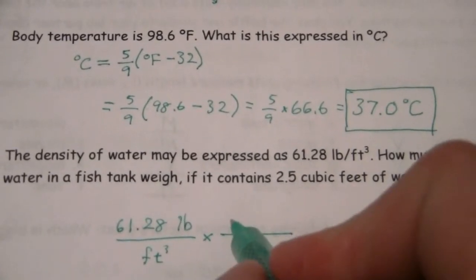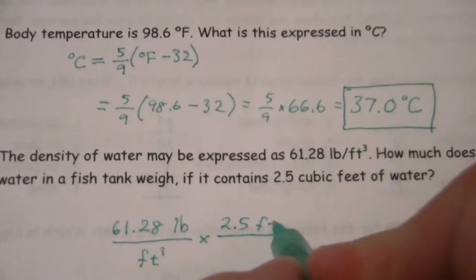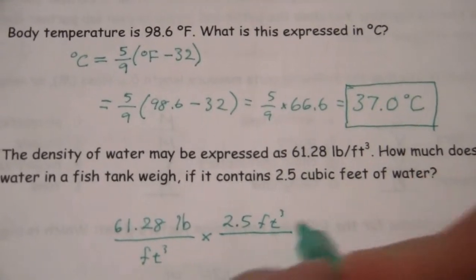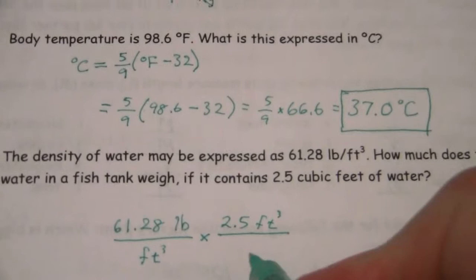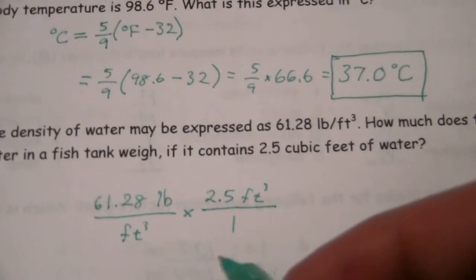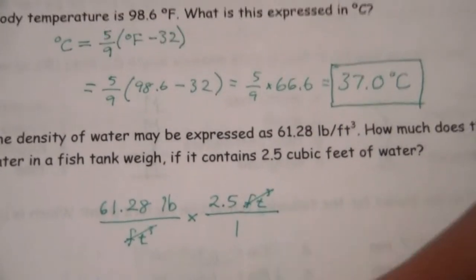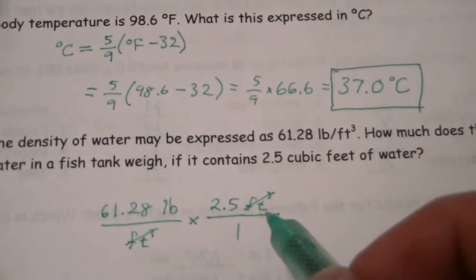You could write this like so: 2.5 cubic feet. And if you like to see some wheels under the train car, if you will, you can put a 1 there. But the cubic feet will cancel, and we'll just multiply this.